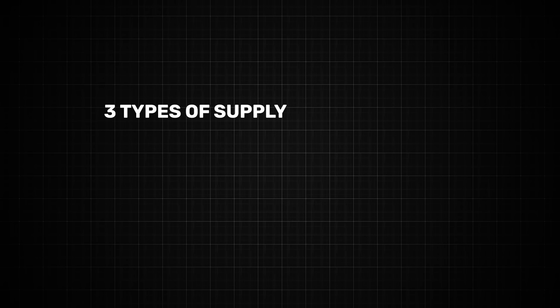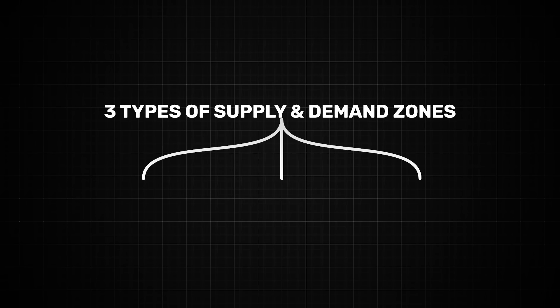So how do we mechanically draw supply and demand zones in the same way every single time? There are three types of supply and demand zones. The first two are the ones that I recommend you use. These are range and pivot zones.